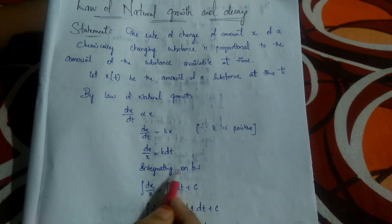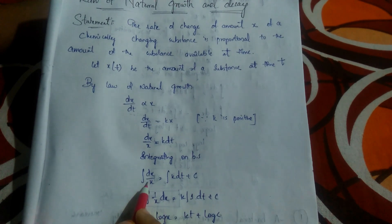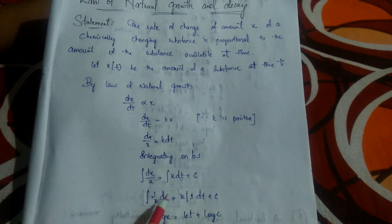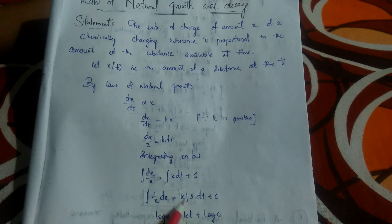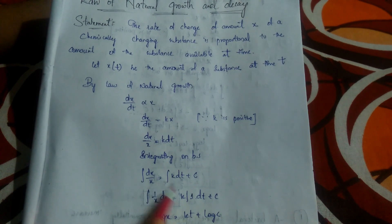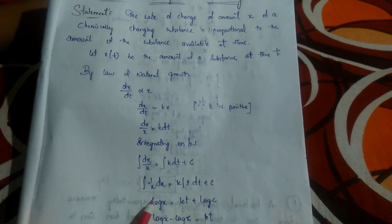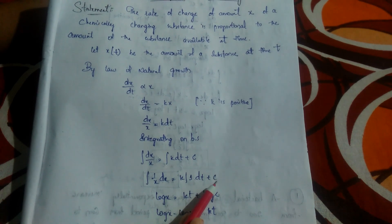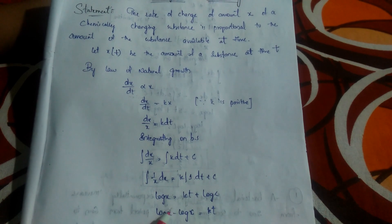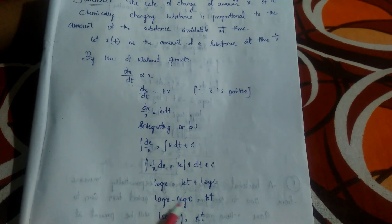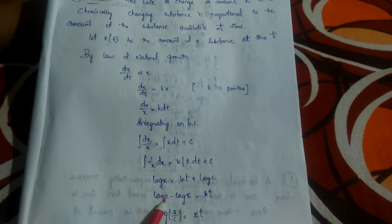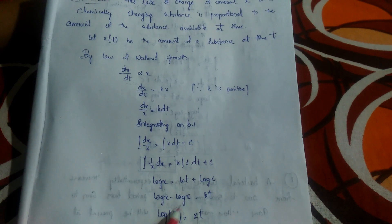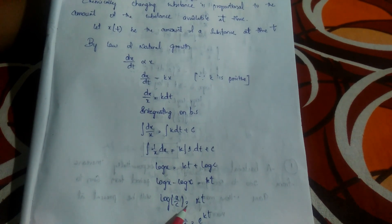Integrate both sides: the integration of dx/x equals the integration of k·dt plus C. Integration of 1/x·dx is log x, and k is a constant so it comes outside: k times the integration of 1·dt plus C. That gives log x equals k·t plus C, which can also be written as log C.